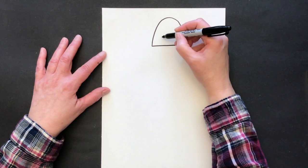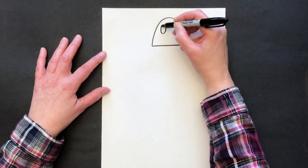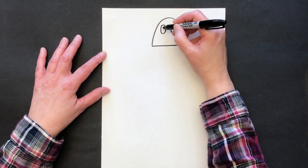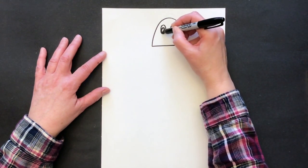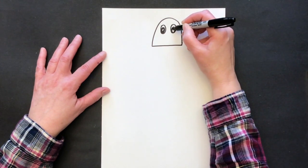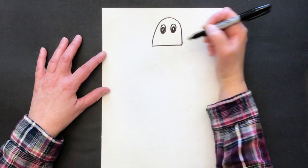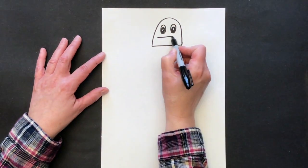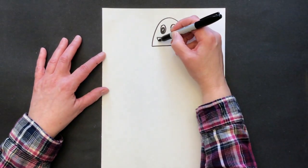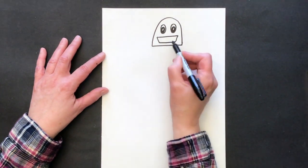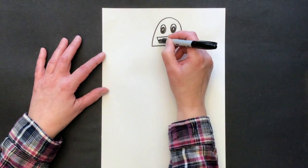And let's see, I need some eyes. I'm going to do oval eyes with a circle inside. And for a mouth, I'm going to draw a trapezoid.